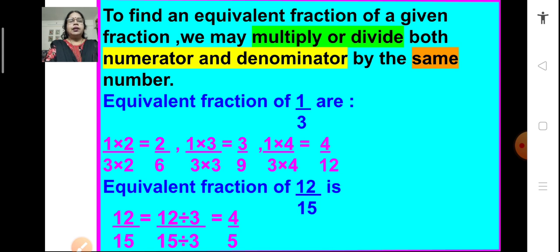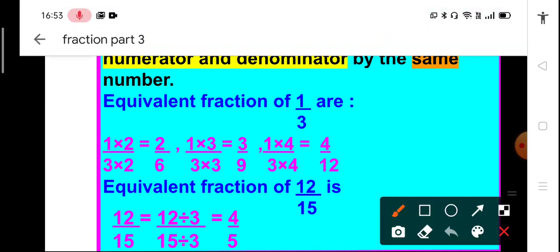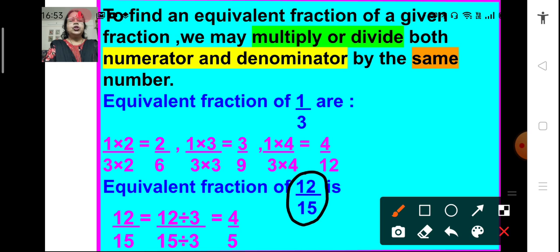The second method to get the equivalent fraction of a given fraction is to divide both the numerator and the denominator by the same number. For example, if we have a fraction 12 upon 15, to get its equivalent fraction we divide its numerator and denominator by 3 and we get 4 upon 5. So, 4 upon 5 is the equivalent fraction of 12 upon 15.